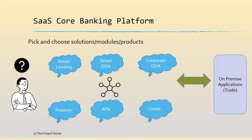These modules or products integrate with on-premise applications. For example, a bank may choose to retain its trade module which is on-premise and integrate it with a pick list among these cloud modules.